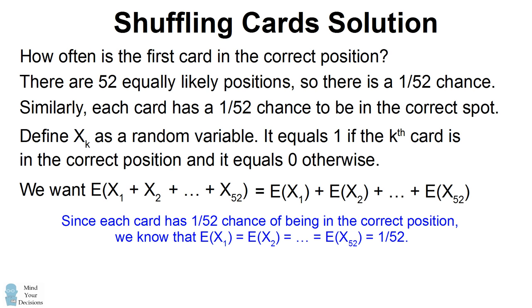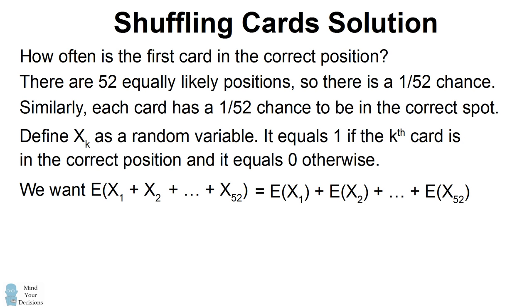So we can substitute the value of 1 over 52 for the expectation of each individual random variable. We now have 1 over 52 added to itself 52 times. Therefore, we have a sum that's equal to 1. And that's our answer.